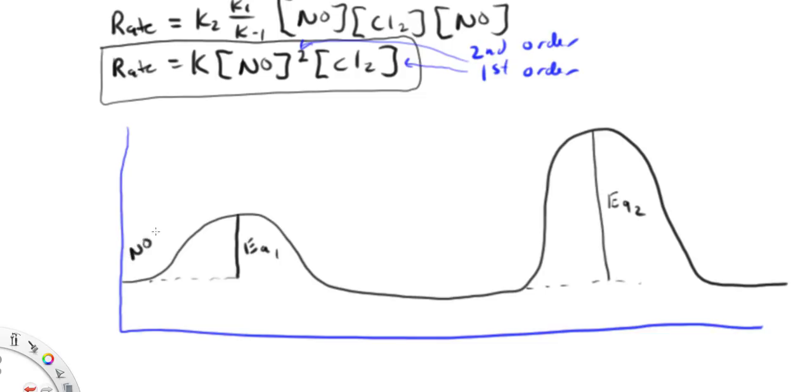So this is going to represent my activation energy for the first reaction, and this is my activation energy for the second reaction. We're starting off with NO and Cl2. And what I'm going to get is a transition state where there's the bond forming between the NO and the Cl2. This is a transition state.